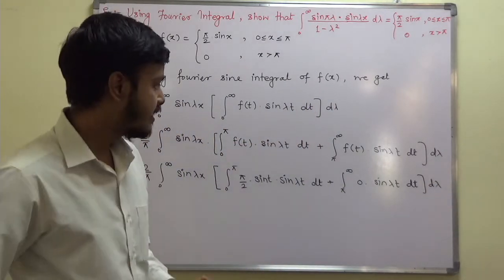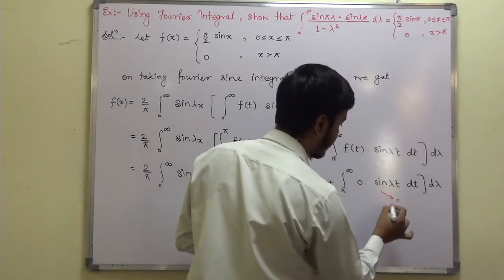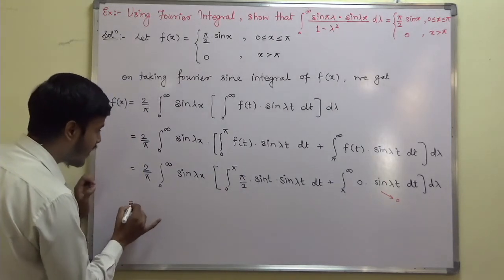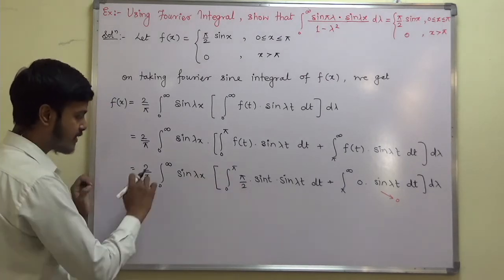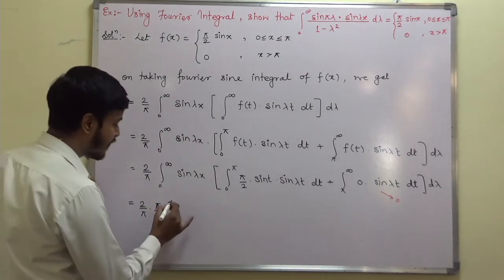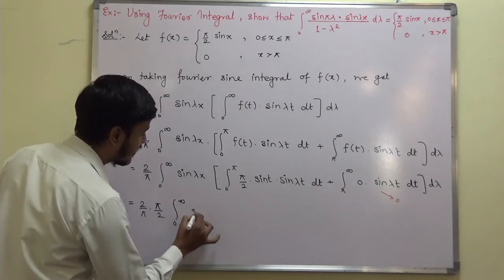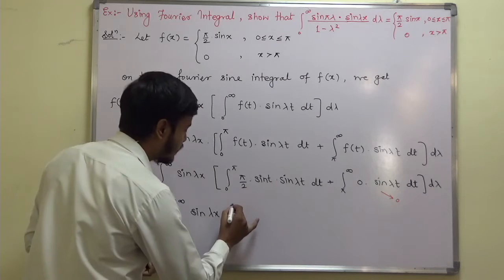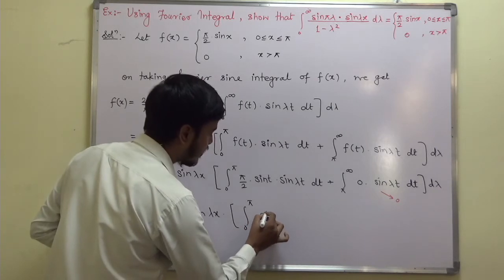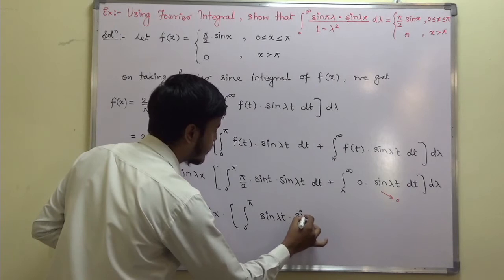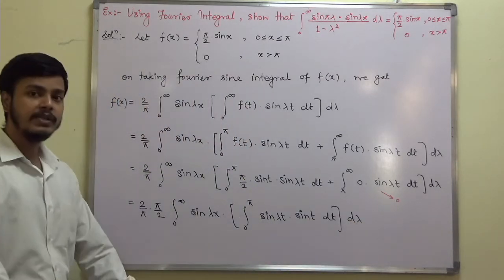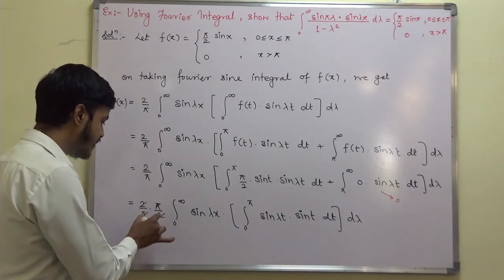The second integral leads to 0. So we just have to solve the first integral. I will take the pi/2 constant outside, so this becomes 2 by pi times pi by 2 times the integral from 0 to infinity of sin(λx) times the integral from 0 to pi of sin(λt) · sin t dt dλ. The 2/pi and pi/2 cancel.